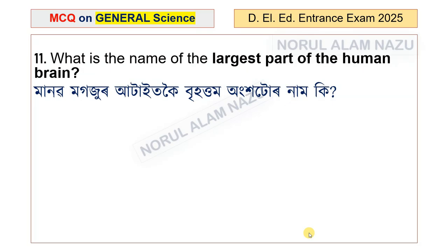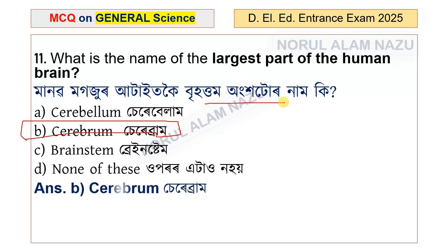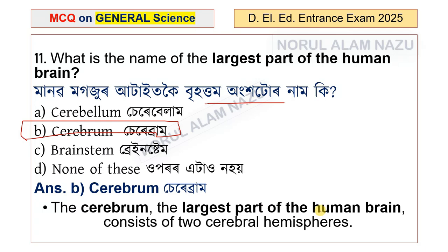Question number 11: What is the name of the largest part of the human brain? The options include the cerebellum, cerebrum, and brain stem. The cerebrum is the largest part of the human brain and consists of two cerebral hemispheres.